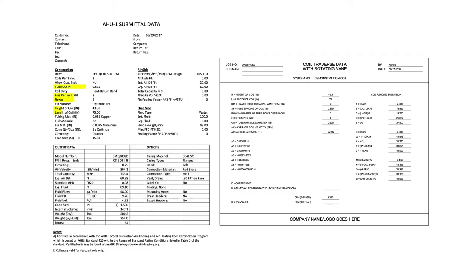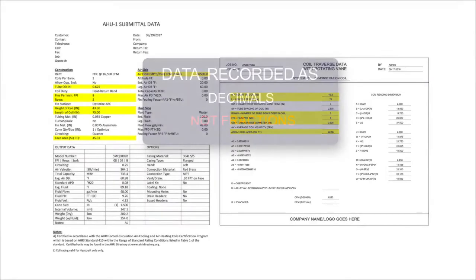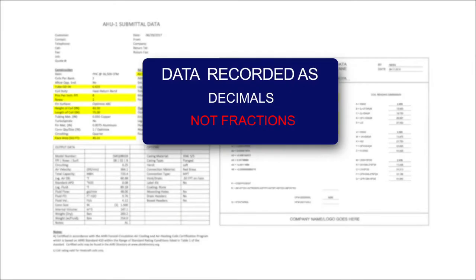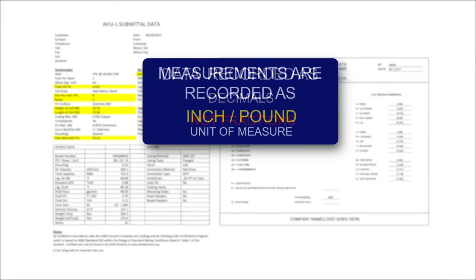To start the process, submittal data is recorded into the coil traverse data with rotating vane form, which is then verified in the field. This AHU-1 submittal data was provided and used to input the highlighted measurements into the form. The data is recorded as decimals and not fractions, using the inch-pound unit of measure.